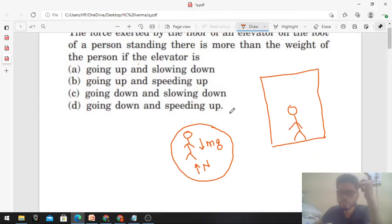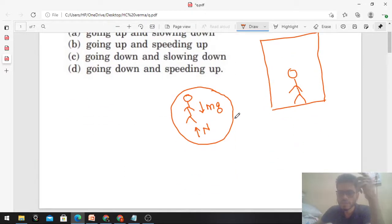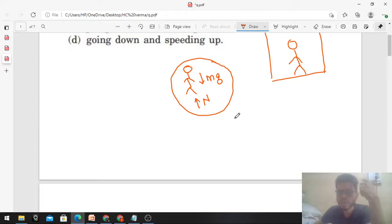Now the acceleration that happens is governed by the net force on the body or on any object. So if I talk about this man, there are two forces. So the acceleration of the man will be decided or governed by these two forces only.